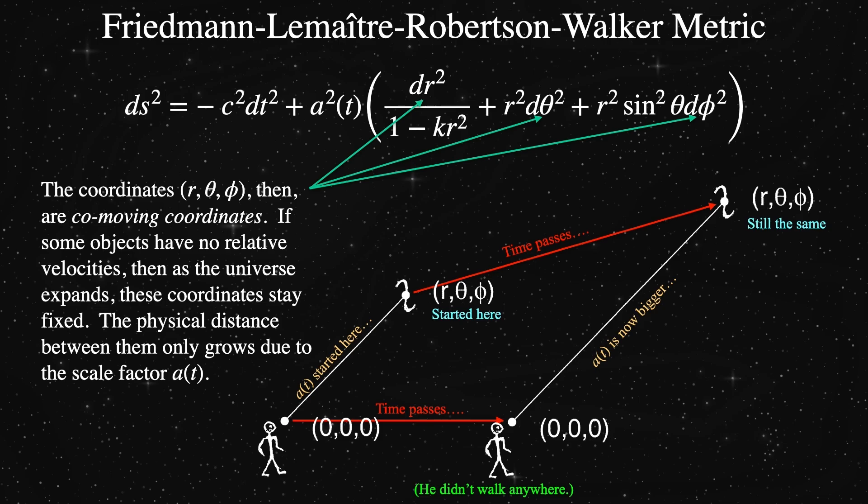This would be possible if it were an isolated field galaxy far from any clusters. Let's say it's in the gravitational balance point between a bunch of galaxy clusters. Then, in this case, our theta phi coordinates would not change at all as the time passes. But the distance between stickman and far galaxy would still grow. We call these coordinates co-moving coordinates.